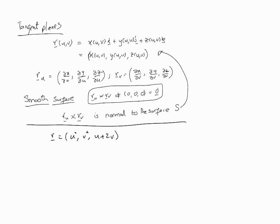Let's look at this example: r = (u²v², u+2v) and we want to find the equation of the tangent plane to the surface with these parametric equations at the point (1,1,3). First, we'll calculate r_u and r_v. r_u turns out to be (2u, 0, 1) and r_v is (0, 2v, 2).